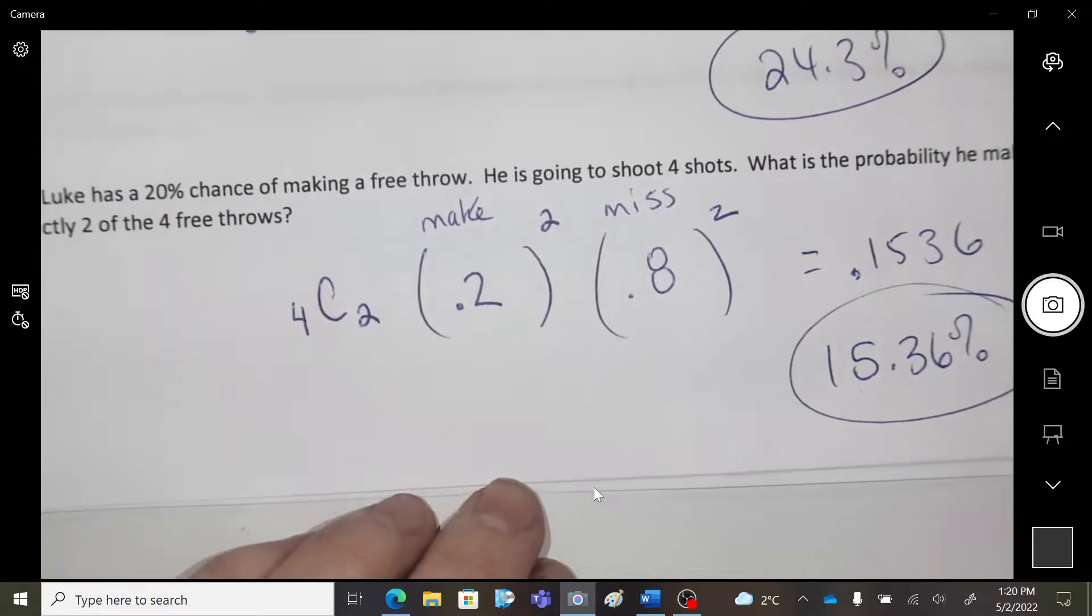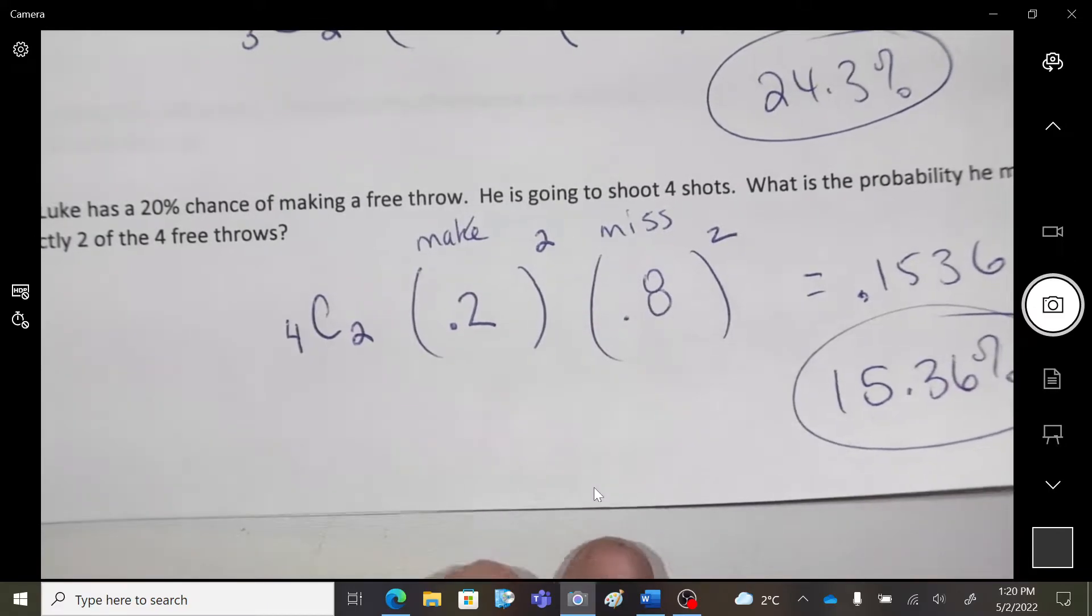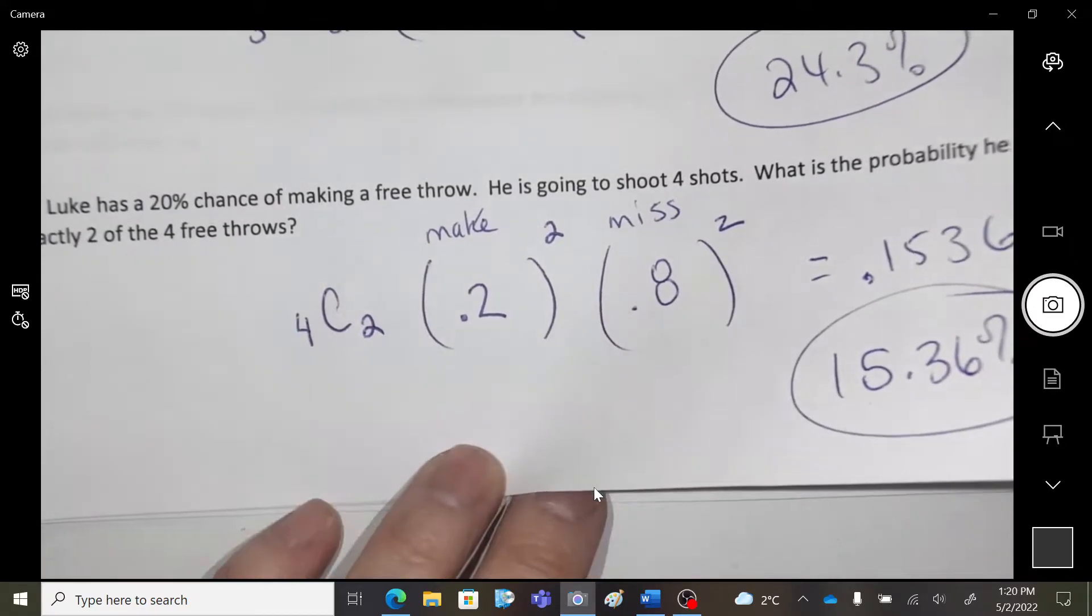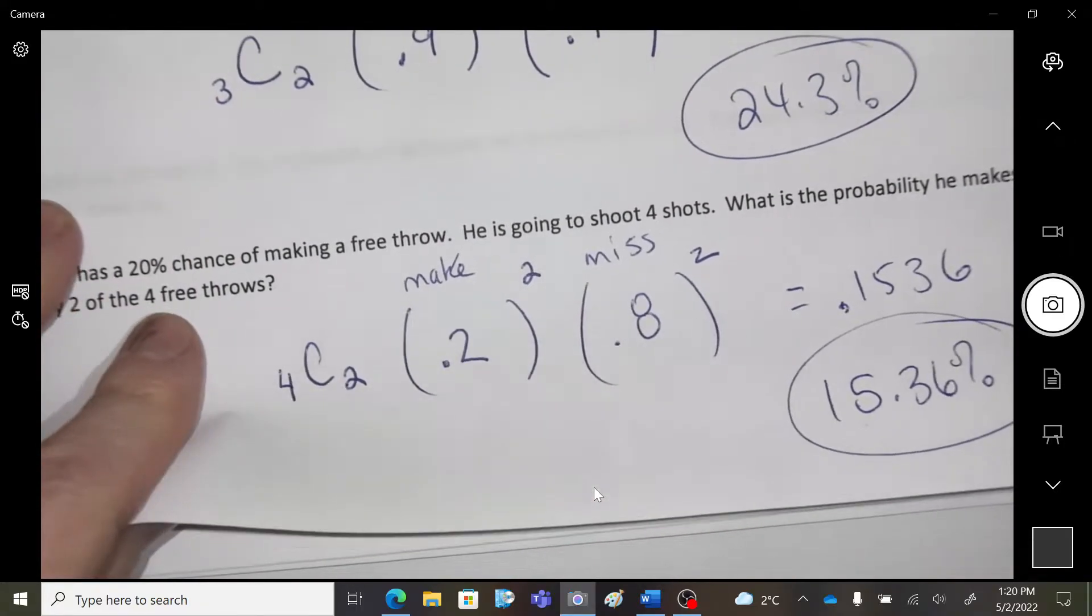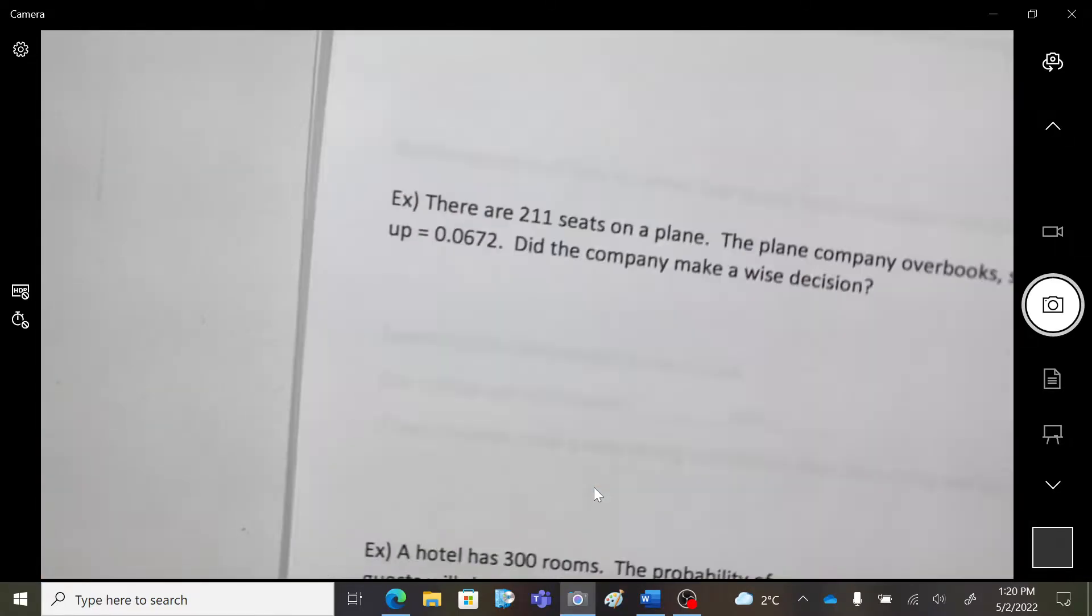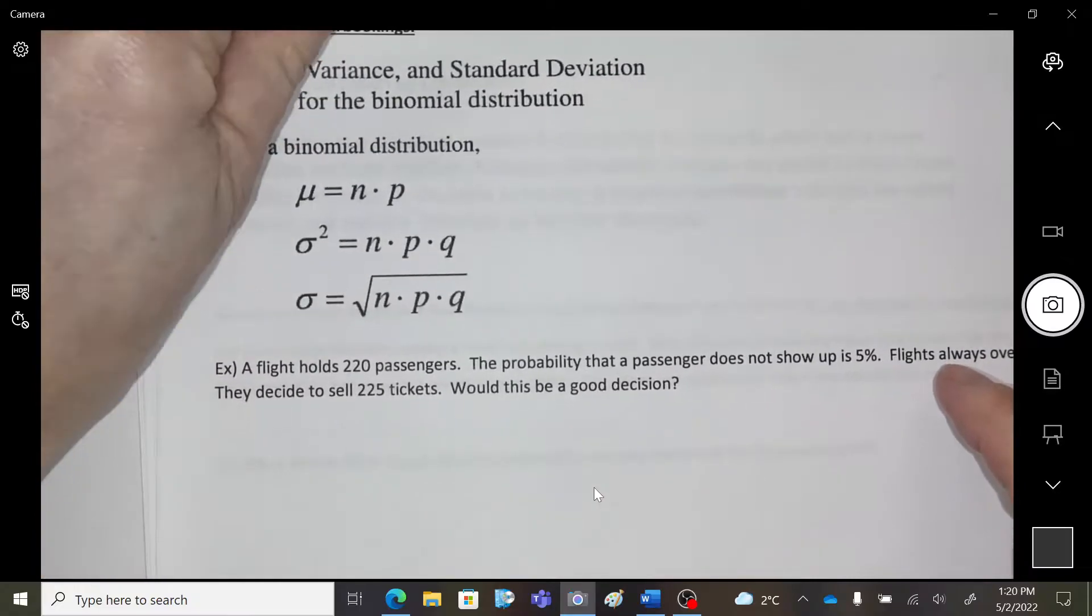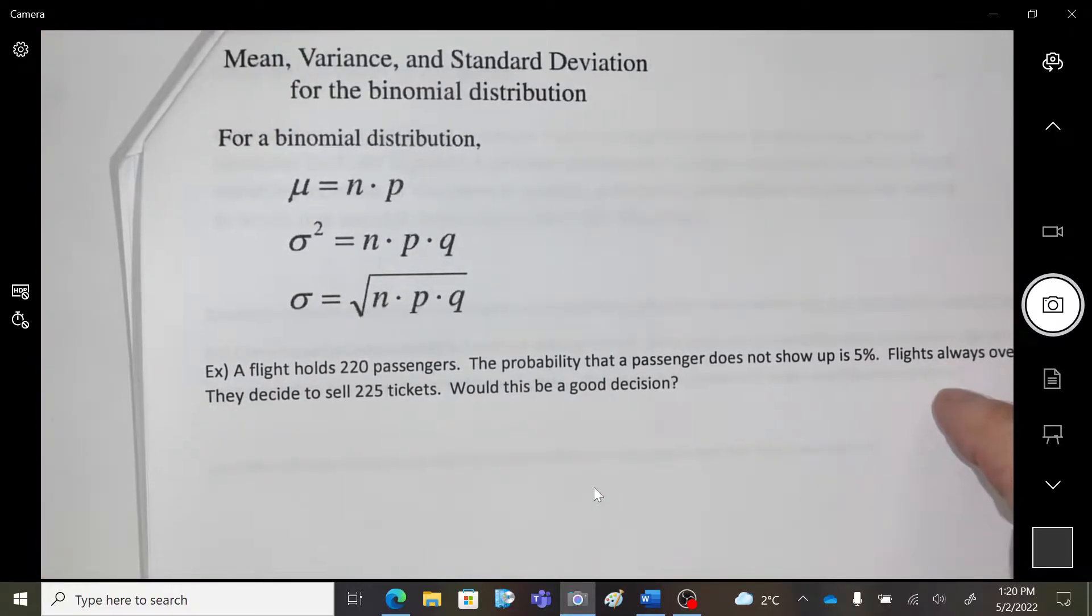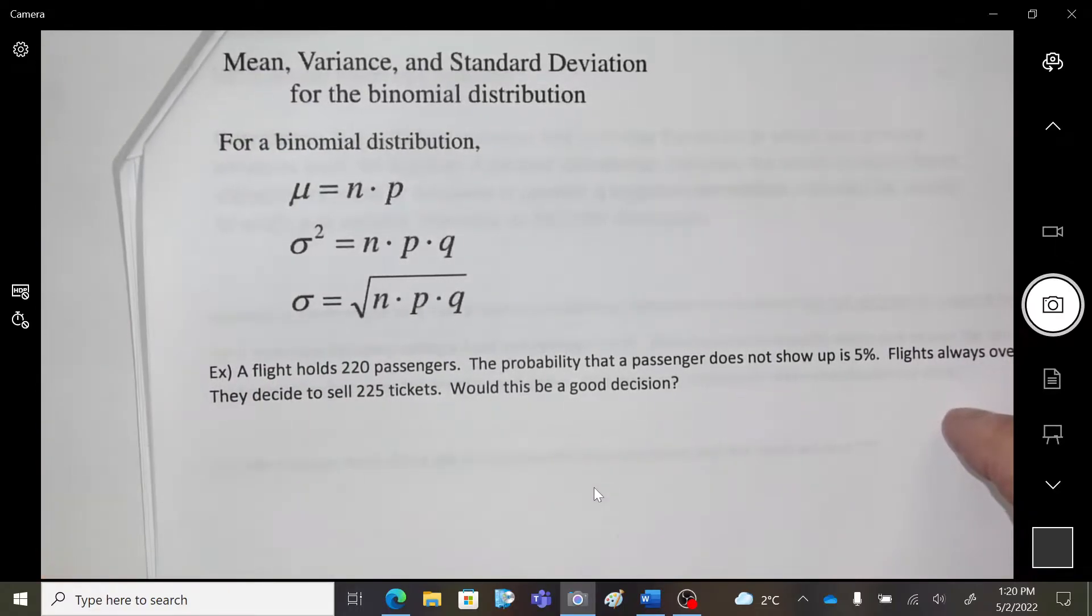Okay, so that's the odds that Luke will make two shots. Okay, and it's low because 20% shooting free throw percent is not very good. All right, and then we're going to do this page. Okay, so all these formulas are on your formula sheet for binomial distribution.